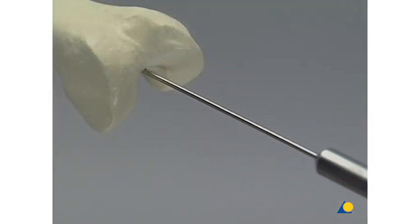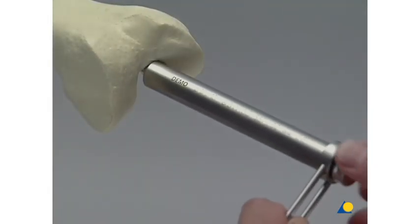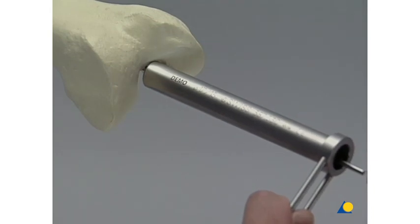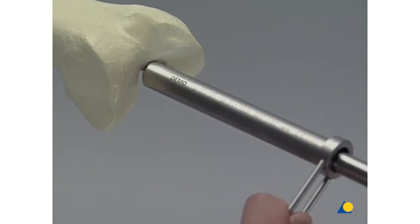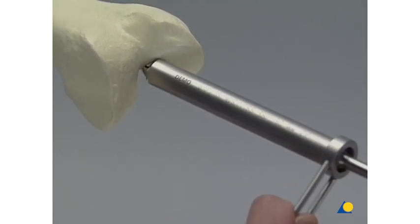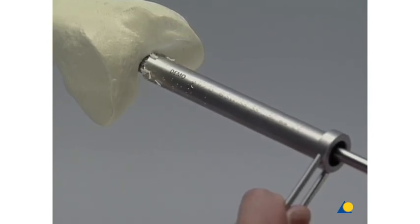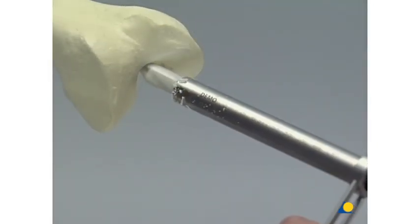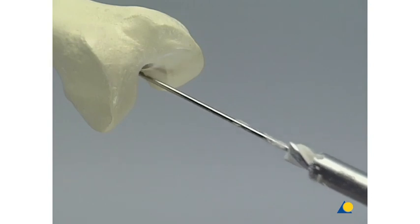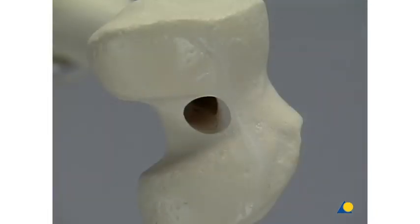To open the medullary canal, the protection sleeve and drill sleeve are pushed over the guide wire onto the notch, and with the drill bit, the medullary canal is opened to a depth of approximately 30 mm. The drill bit, protection sleeve, and guide wire are then removed. The knee joint is carefully rinsed to remove all drilling debris.